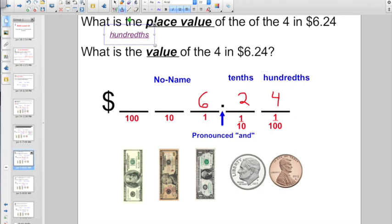Make sure you spell it correctly. It has a little 'd' in there. It kind of trips people up. What is the value of the 4 in $6.24? Well, it's four in the hundredth place. It's actually worth four cents, isn't it?